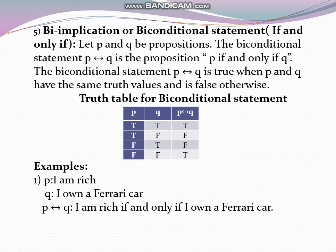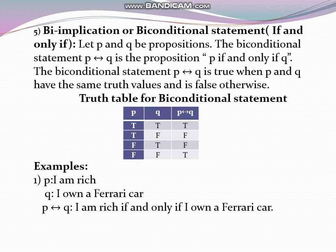Now let us go to the bi-implication or bi-conditional statement, 'if and only if'. Let p and q be propositions. The bi-conditional statement 'p if and only if q' is true when p and q have the same truth values, and false otherwise. Same truth values means both are true or both are false at the same time. Looking at the truth table: if p is true and q is true the bi-conditional is true; if p is false and q is false it is also true; otherwise it is false.